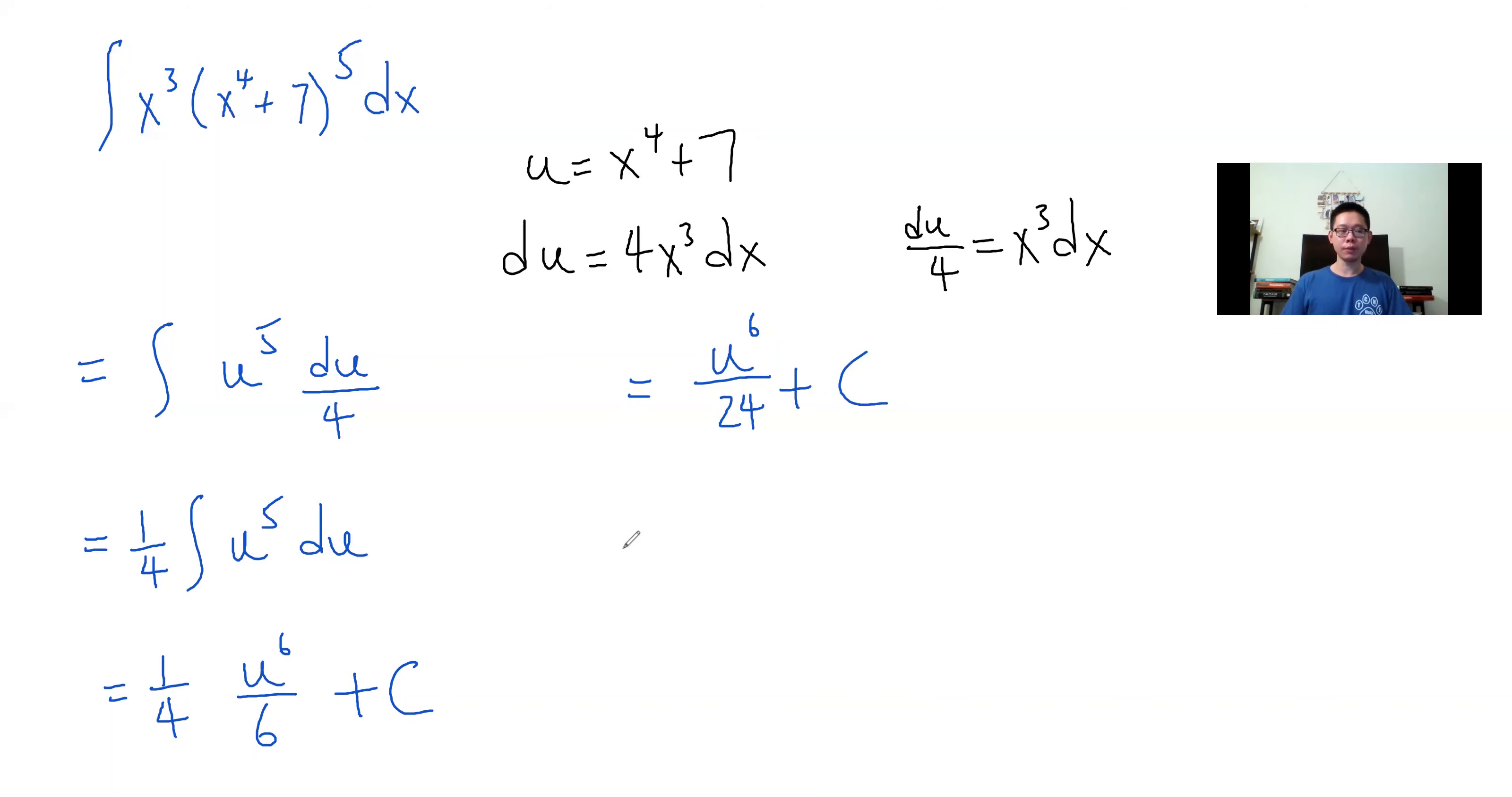Do not stop here. If you stop here, you forget to go back to the original. Your problem started with x, so make sure you go back to x. Your final answer is x to the fourth plus seven raised to the sixth power divided by 24 plus C.